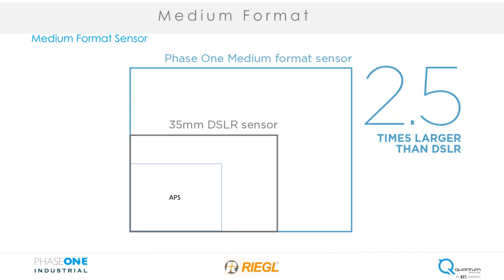Medium format — I like using this illustration because it gives perspective of the sensors that Phase One has standardized within our cameras compared to other cameras on the market today. This means I have a larger footprint of coverage per frame, which means fewer images, fewer flight lines, and increased capacity. Now I can get more jobs done with the same equipment using Phase One compared to another type of imager.